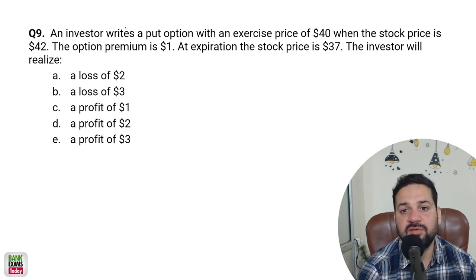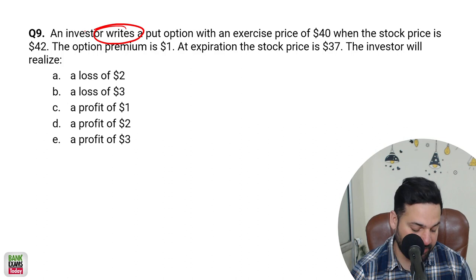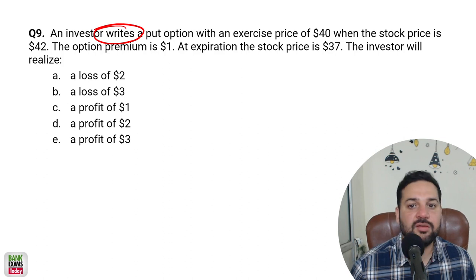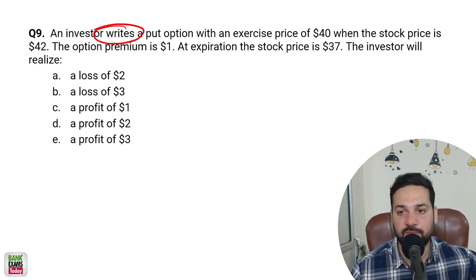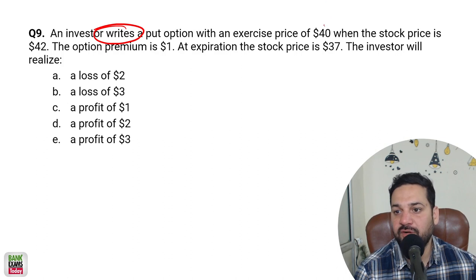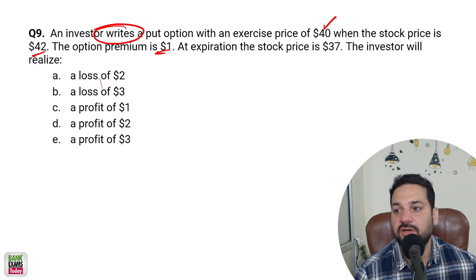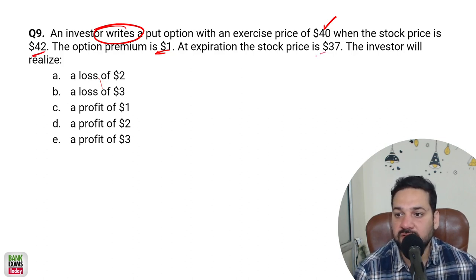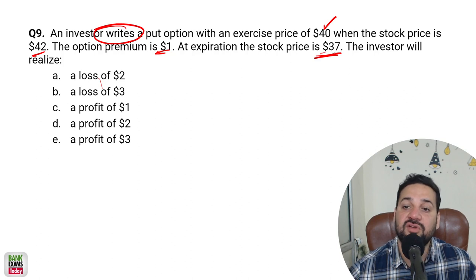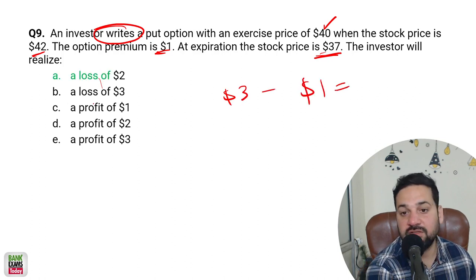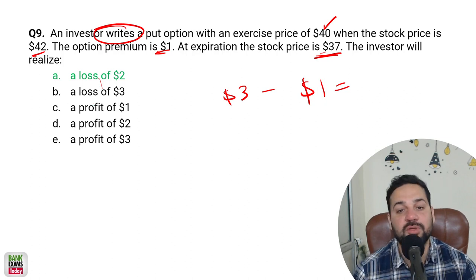Example: an investor sold (wrote) a put option at an exercise price of $40, with an option premium of $1. The stock price at the time was $42. At expiration, the stock price is $37. The investor who sold the put option needs to make a payment: $40 minus $37 equals $3, minus the $1 premium received, so he makes a net loss of $2. He wrote the put option — he did not buy it.